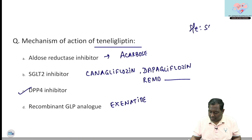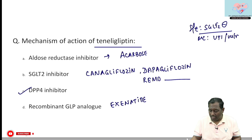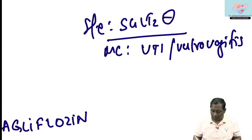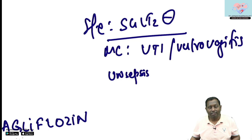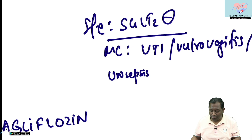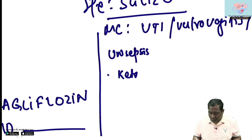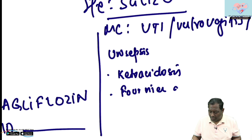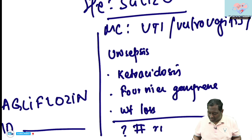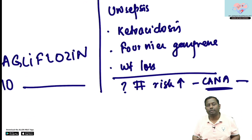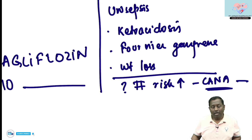The next potential MCQ: side effects of SGLT2 inhibitors. The most common side effect is UTI; in female patients, vulvovaginitis may be noted. The term 'urosepsis' is preferred in INICET/PGI Chandigarh-related exams. SGLT2 inhibitors can also be associated with euglycemic ketoacidosis and Fournier's gangrene. There were earlier reports that canagliflozin causes increased fracture risk, but according to the 14th edition of Goodman & Gilman, this hypothesis is now questionable.